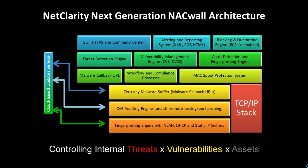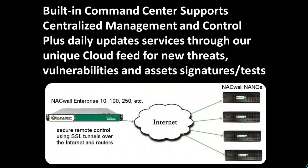We also have daily updates with built-in features for detecting zero-day or new malware that could be sitting on computers on your network, even though you're running antivirus software. There's a built-in daily updated CVE auditing engine — that's the Common Vulnerability and Exposure standard — and a fingerprinting engine that's frequently updated to ensure we know every kind of device that comes and goes on your network. The larger appliances — the NACWAL Enterprise 10, 100, and 250 — can easily manage Branch Pro and NACWAL Nano appliances in remote locations using SSL tunnels securely over the public internet. All appliances come with daily updates to cover new threats, vulnerabilities, and asset signatures and tests.